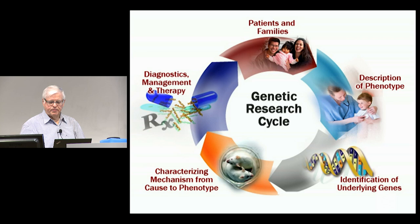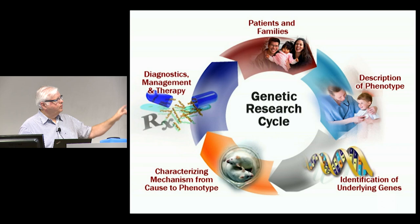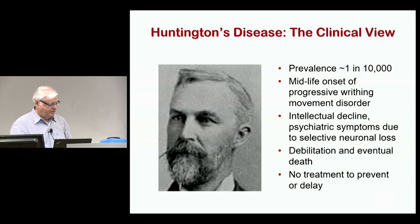Even in a dominant genetic disease, you don't go around the cycle once — you go around it multiple times because genetics has power beyond simply identifying a gene. It has the ability to inform all parts of the cycle. I'm going to use as an example Huntington's disease, which I've worked on for 35 years, and hopefully we're getting to the point soon where there may be a treatment for it, but there isn't yet.